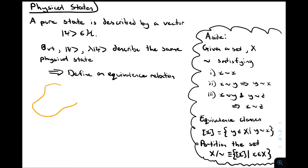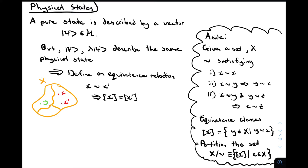To understand how equivalence classes partition the set, look at the drawing on the left. We have some larger set X, and the equivalence relation has split it into three equivalence classes. Element x and element x' are in the same equivalence class, so they're equivalent and their equivalence classes are equal. Element Y is in a different equivalence class from X, so it doesn't tilde X. Importantly, this doesn't just mean the equivalence classes are unequal — it means their intersection is the empty set, guaranteed by transitivity.